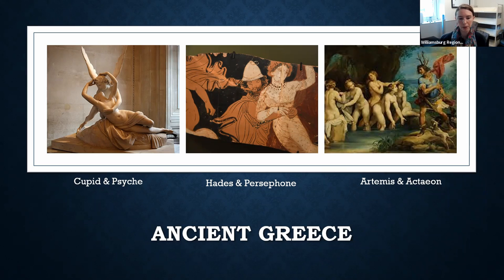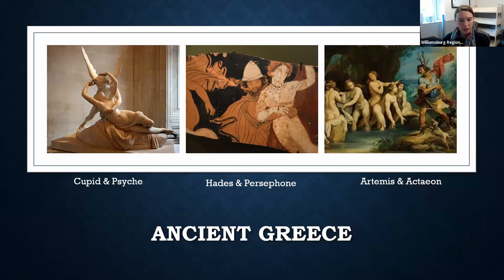The tale of Hades and Persephone — the goddess of spring who's kidnapped by the king of the underworld and stays there for half a year — is another origin. And the slightly lesser-known myth of Artemis and Actaeon, where a mortal man is turned into a stag by the goddess of the hunt as punishment for spying on her while bathing. You can see three representations of each one of these myths.